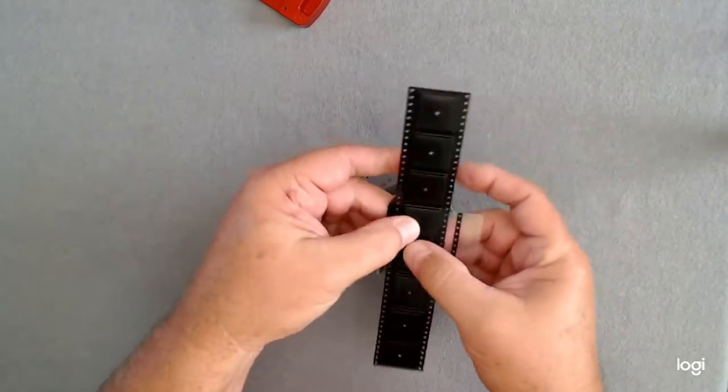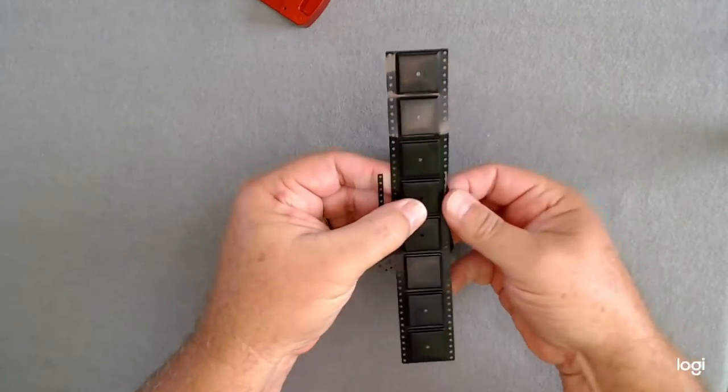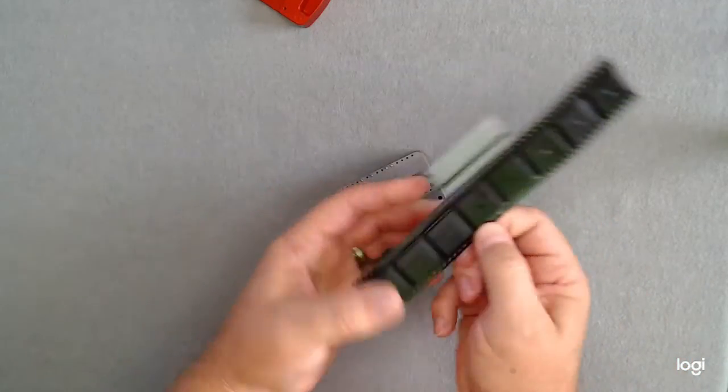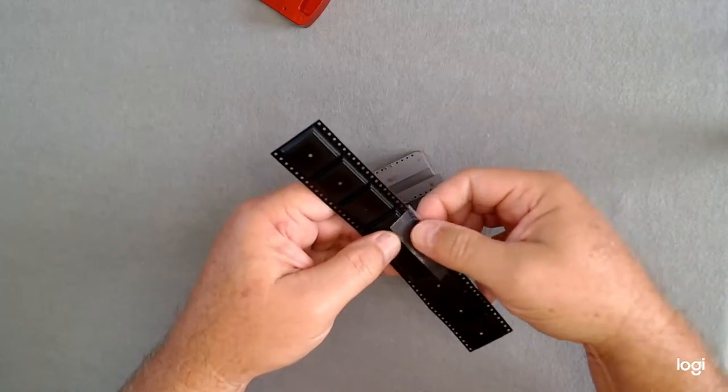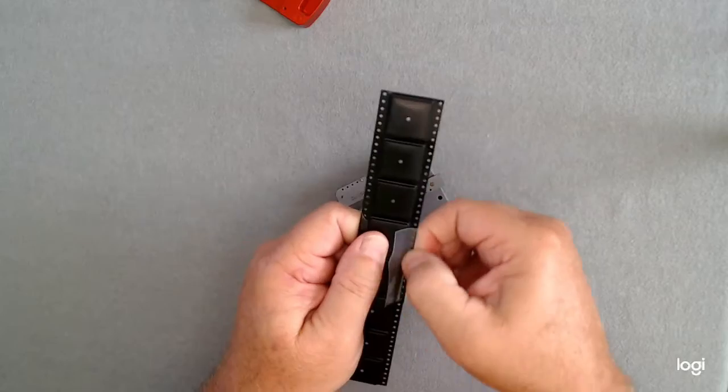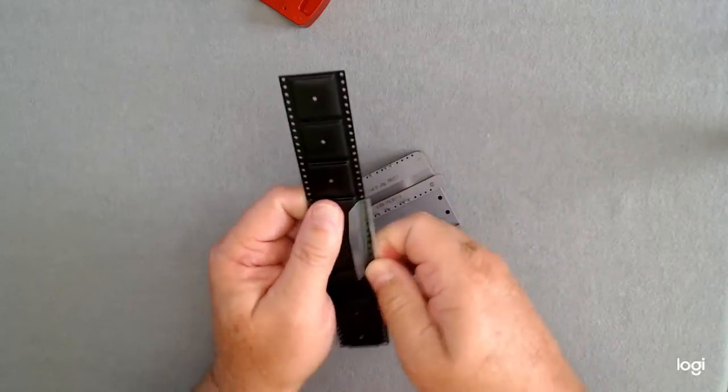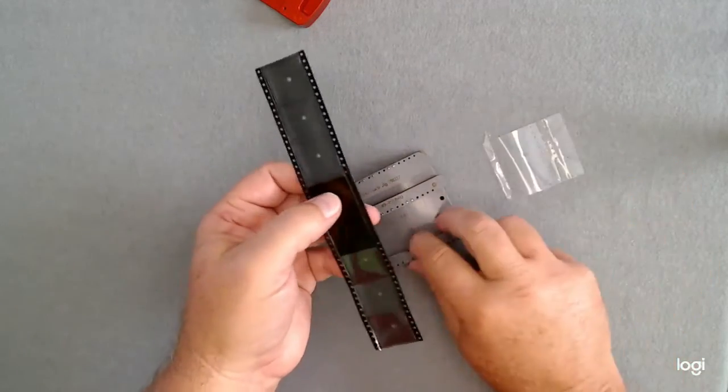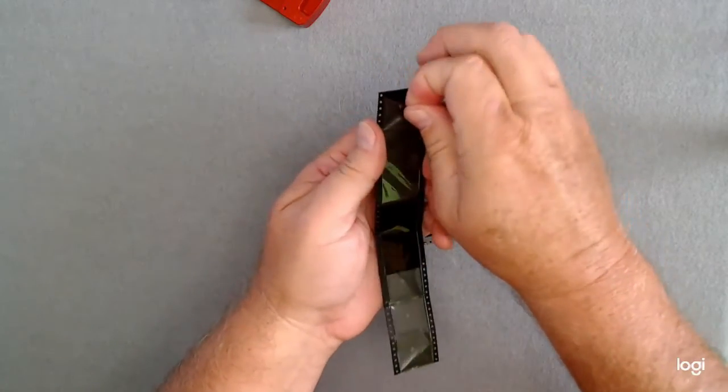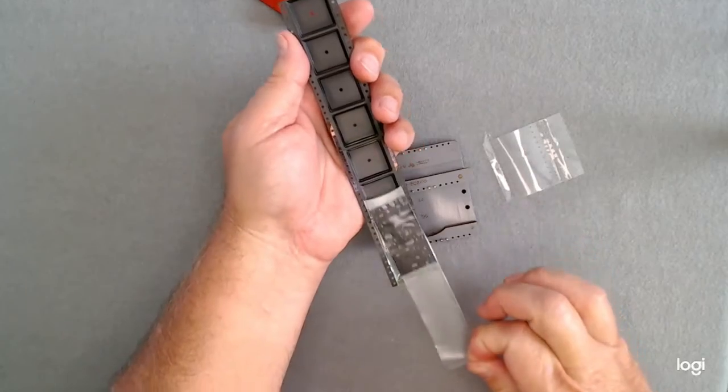This side goes over and covers the sprocket holes like we've done before like this. Again you have the self alignment on this side so all you do is pinch it in. It'll self align. Go right over the sprocket holes. Once you have that on you pull the protective piece off. Make sure it's done and as you go through your feeder you'll see it works like that.